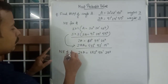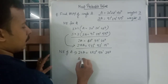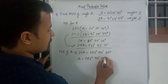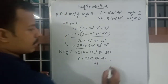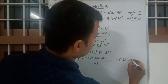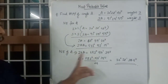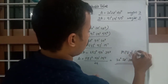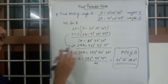So how do you get the value of A? A = 883°50'35" divided by 29. The answer is A = 30°28'38.5". That is the MPV of A.